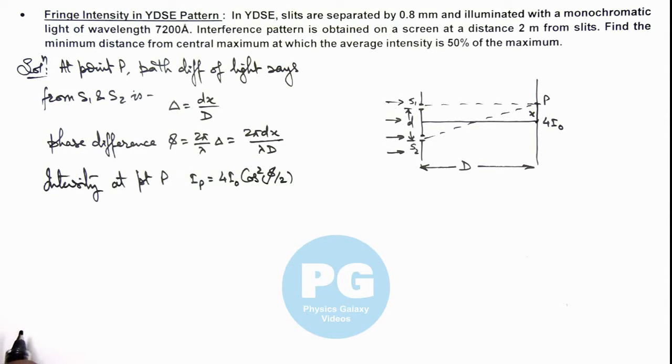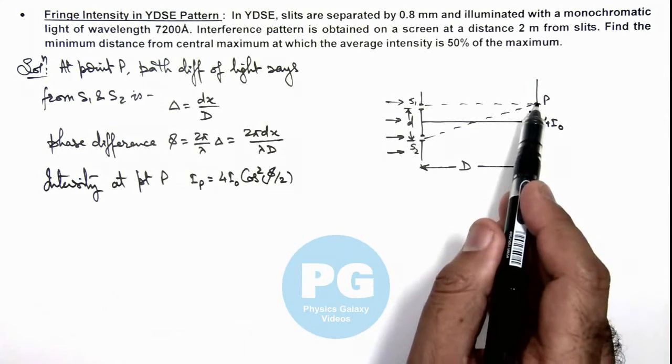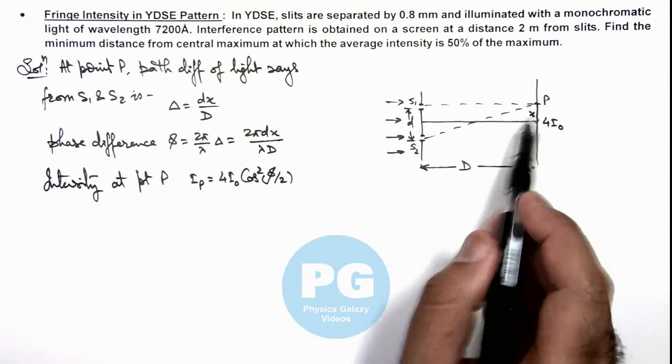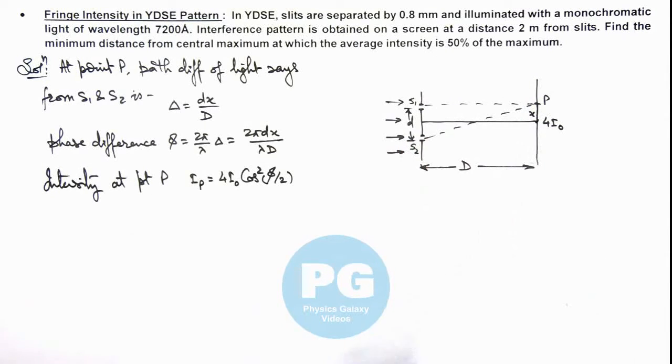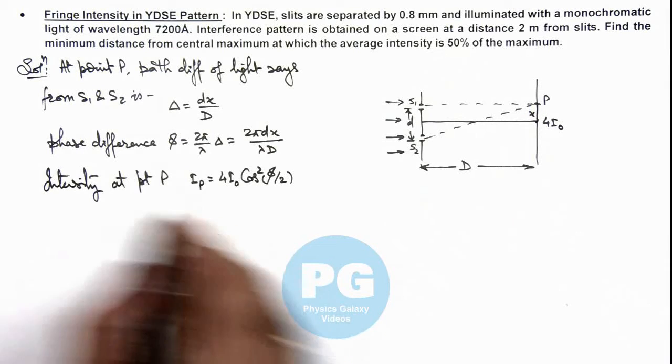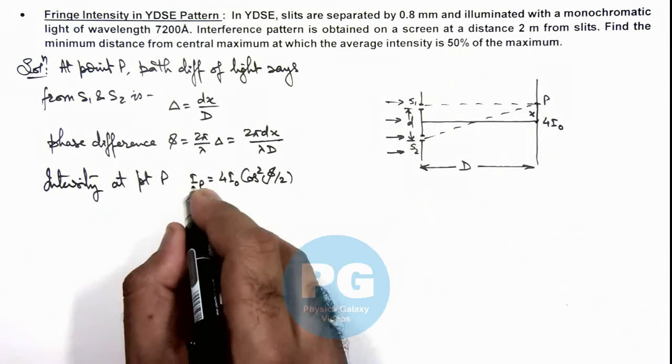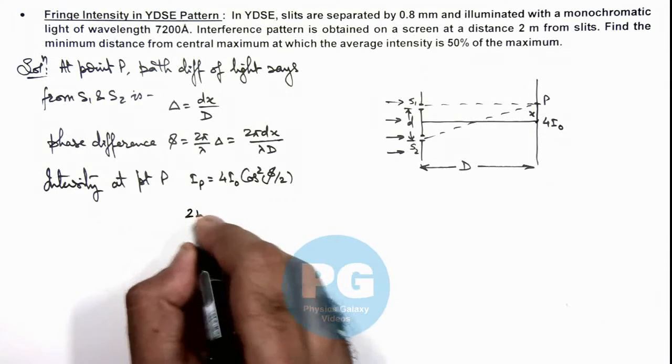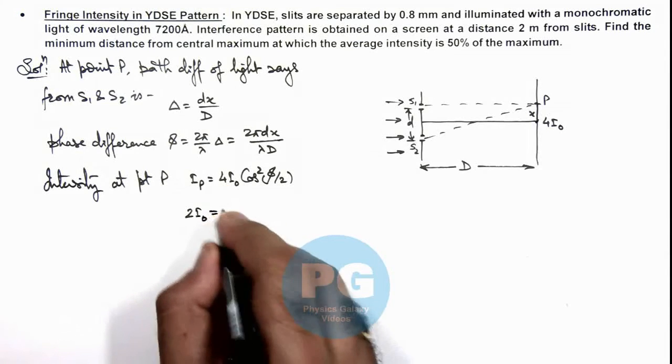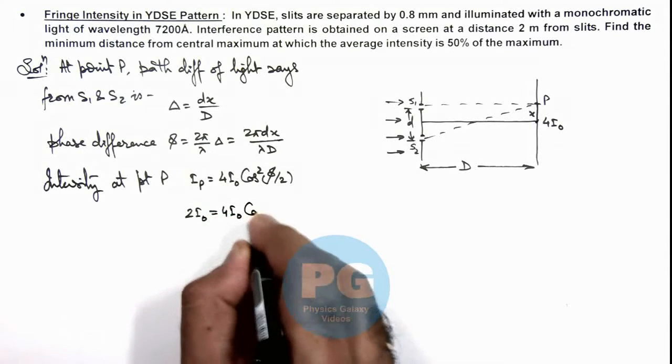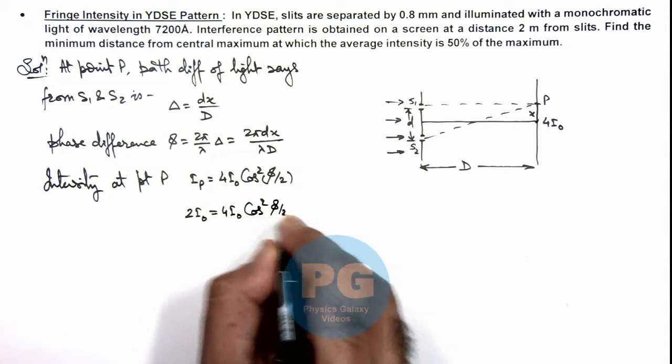And here we are required to find the position of point P or the distance x where intensity is 50 percent of the maximum. That means we are given that Iₚ is equal to 2 I₀, which is 50 percent of the maximum. This is 4 I₀ cos² (φ/2).